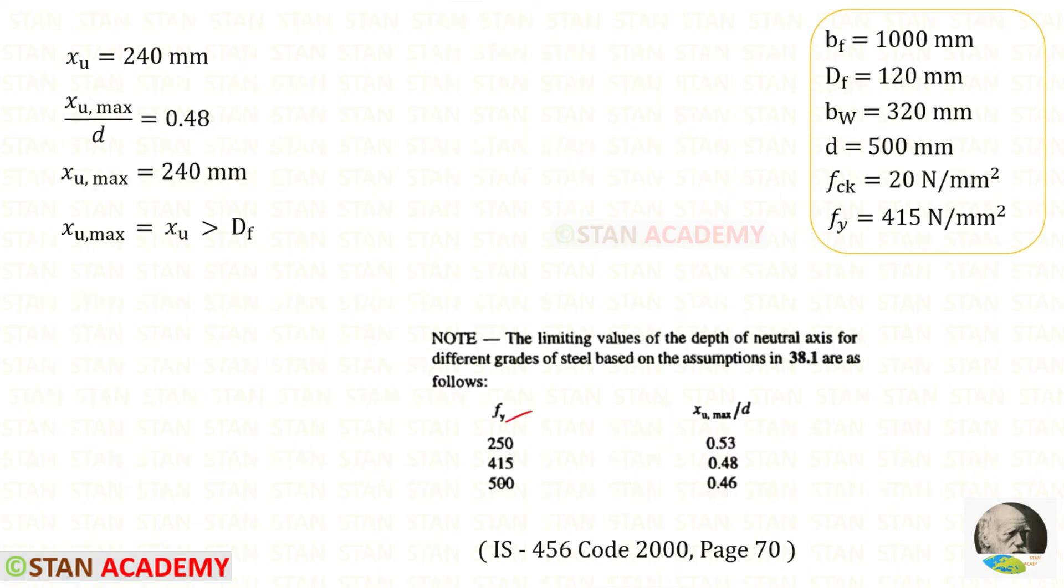For FY 415, XU max upon D is 0.48. So XU max will be 0.48 into 500. We will get 240 mm. XU and XU max are having the same value and both of them are greater than DF.